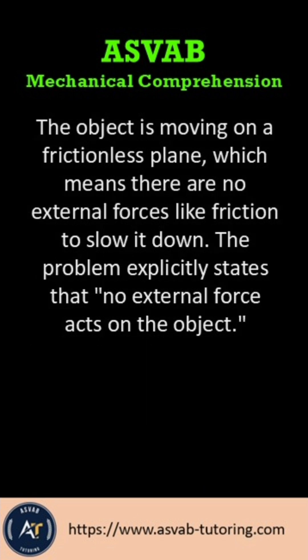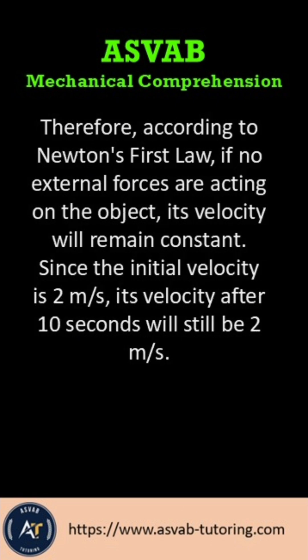The object is moving on a frictionless plane, which means there are no external forces like friction to slow it down. The problem explicitly states that no external force acts on the object. Therefore, according to Newton's first law, if no external forces are acting on the object, its velocity will remain constant. Since the initial velocity is 2 meters per second, its velocity after 10 seconds will still be 2 meters per second.